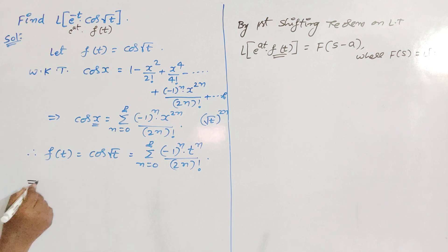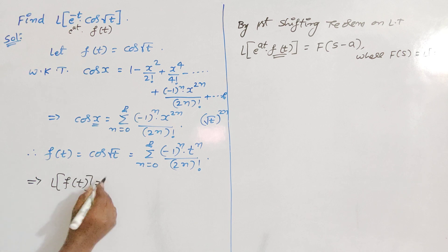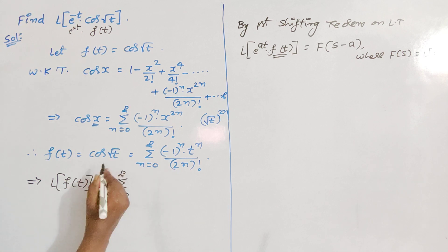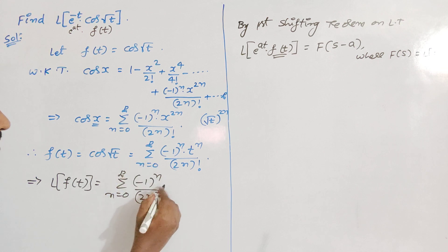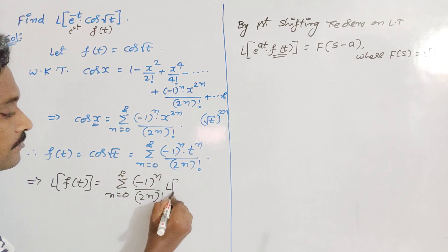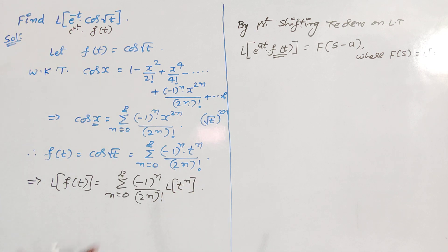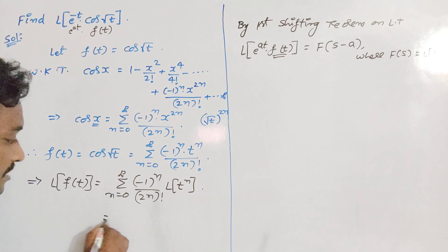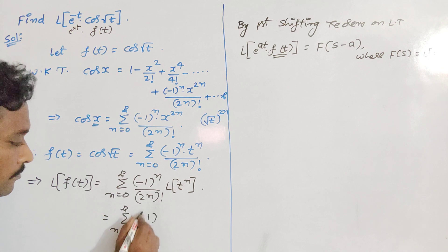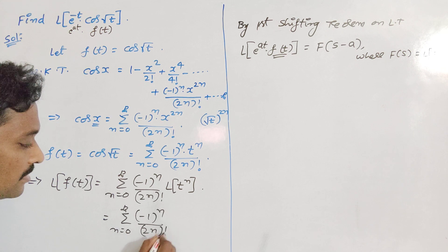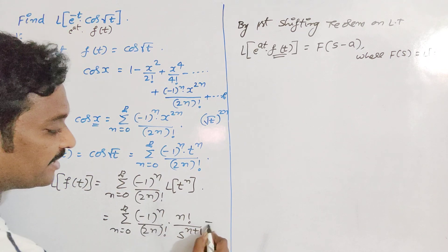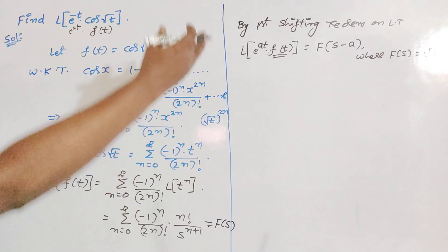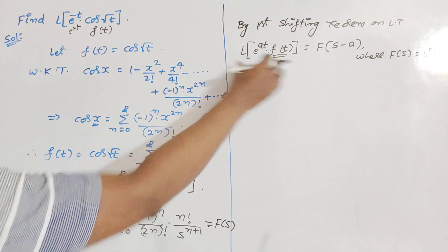Now I will take the Laplace on both sides. So L{f(t)} = Σ (n=0 to ∞) (−1)^n / (2n)! · L{t^n}. Since n varies over 0, 1, 2, 3, ... it is a positive integer, so L{t^n} = n! / s^(n+1). This gives us F(s) = Σ (n=0 to ∞) (−1)^n · n! / [(2n)! · s^(n+1)]. Now write the statement of the first shifting theorem and apply this theorem to the given problem.